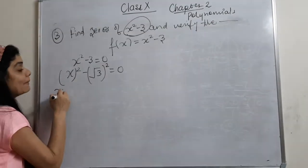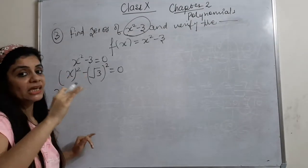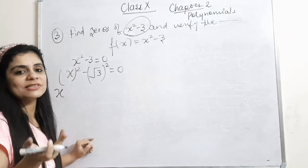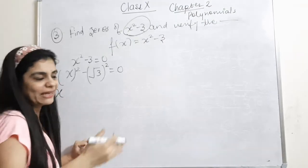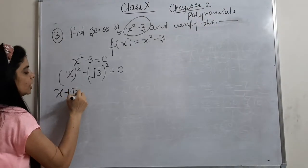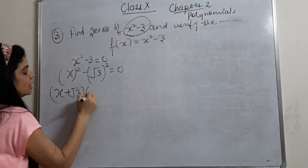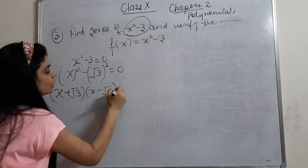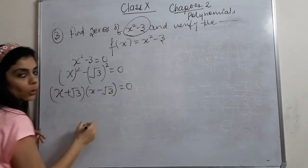Instead, we use the identity a² − b² = (a + b)(a − b). So x² − 3 becomes (x + √3)(x − √3) = 0.